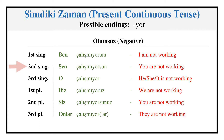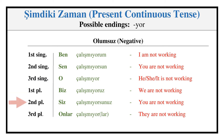Present Continuous — Negative: ÇALIŞMIYORUM, ÇALIŞMIYORSUN, ÇALIŞMIYOR, ÇALIŞMIYORUZ, ÇALIŞMIYORSUNUZ, ÇALIŞMIYORLAR.